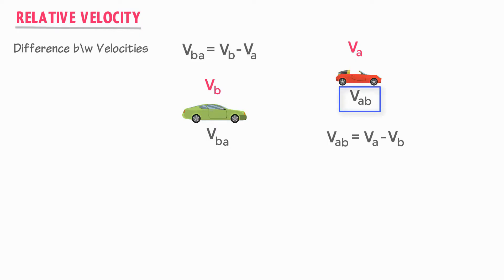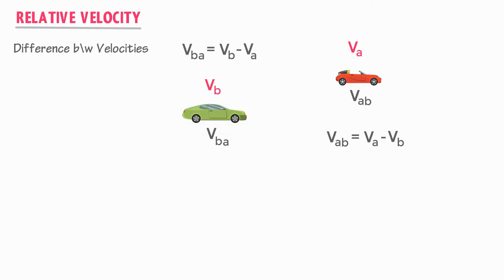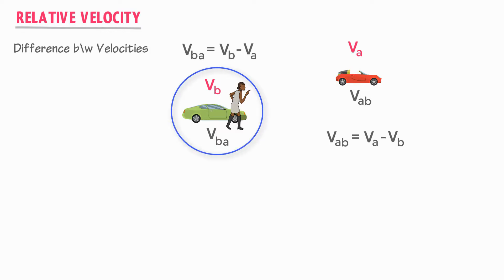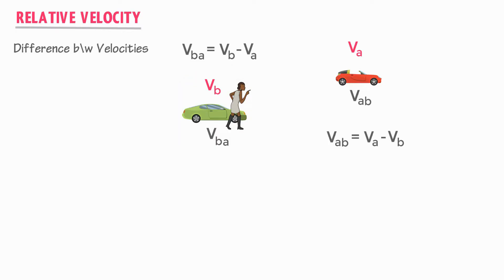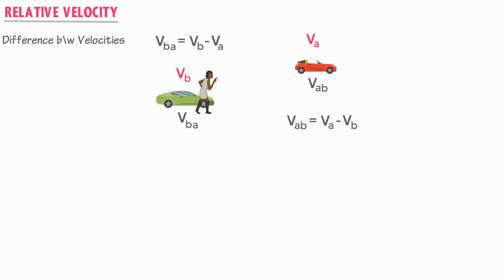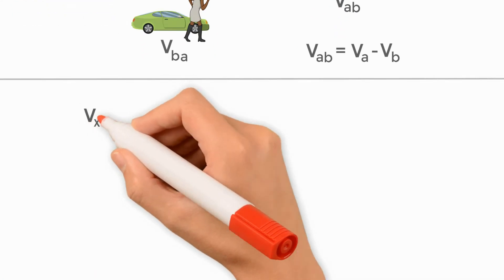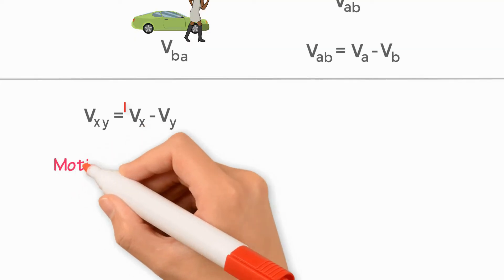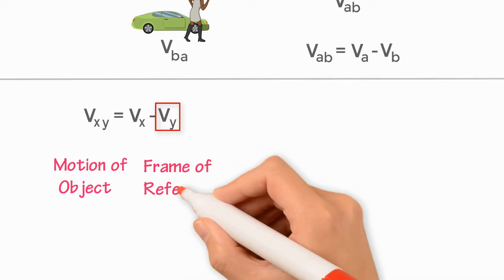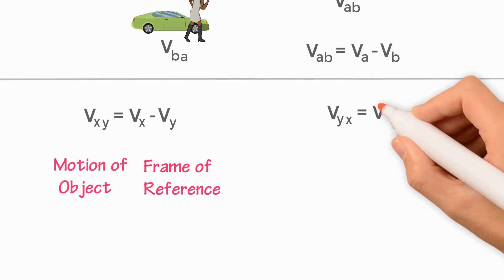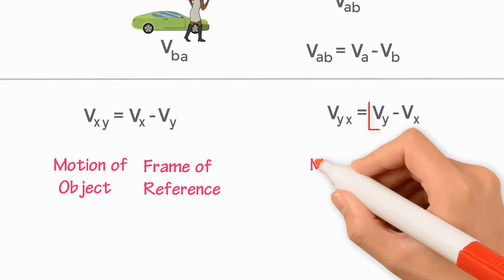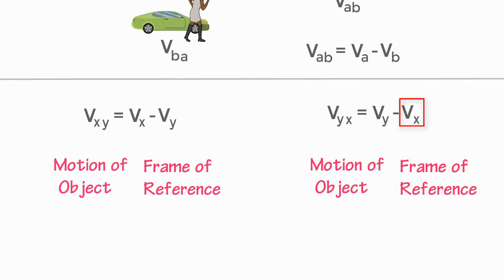VAB is equal to VA minus VB, and VBA is equal to VB minus VA. VAB is the relative velocity of car A with respect to car B — if a person is sitting in car B and observing car A, then car B is the frame of reference. For VBA, VB is the motion of the body and VA is the frame of reference. Similarly, VXY equals VX minus VY, where VX is the motion of the object and VY is the frame of reference. And VYX equals VY minus VX, where VY is the motion of the object and VX is the frame of reference.